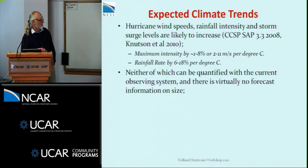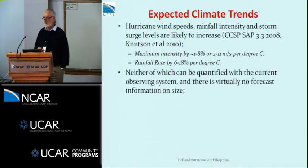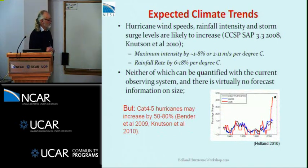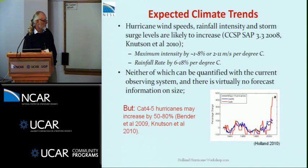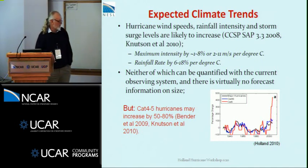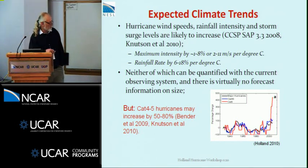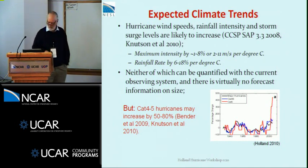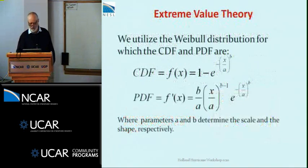The point here is that neither of these terms — mean intensity increase nor rainfall increase — can be quantified by the current observing system. If you're actually going to go look for this, you can't find it. Yet, a paper just out by Bender et al. predicts Cat 4-5 hurricanes may increase by up to 80% in future climate over the next 60 to 70 years. Looking back to 1940, Category 5 hurricanes have gone completely off the scale in the last decade — things perhaps are indicative.